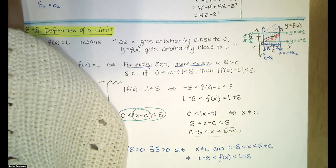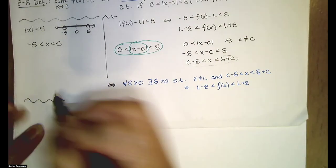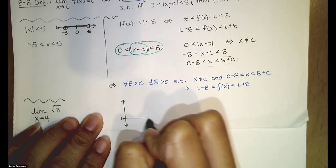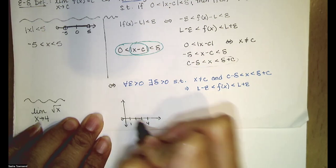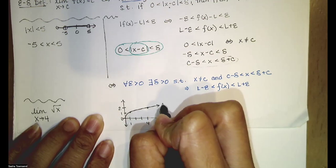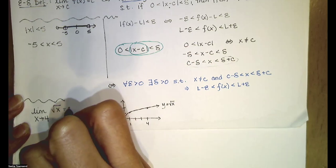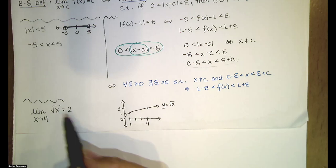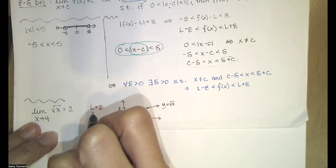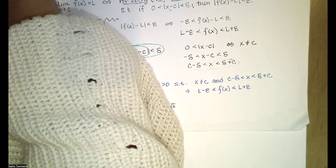Now let's look at this on Desmos for a particular example: the limit as x approaches four of the square root of x. The square root of x is a continuous function, so the limit equals the function value. The square root of four is two, so the limit as x approaches four of the square root of x equals two. In this case, L equals two, c equals four, and our function is the square root of x.